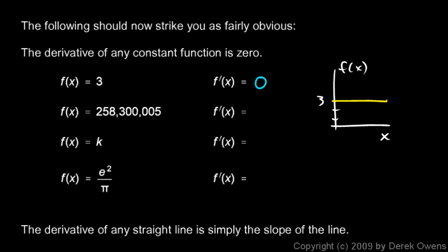If f of x is 258,300,005, the derivative is 0. The slope at every point is 0. If f of x is k, the derivative is 0. If f of x is e squared over pi, e is a constant and pi is a constant, so e squared over pi is a constant. So the derivative is 0.